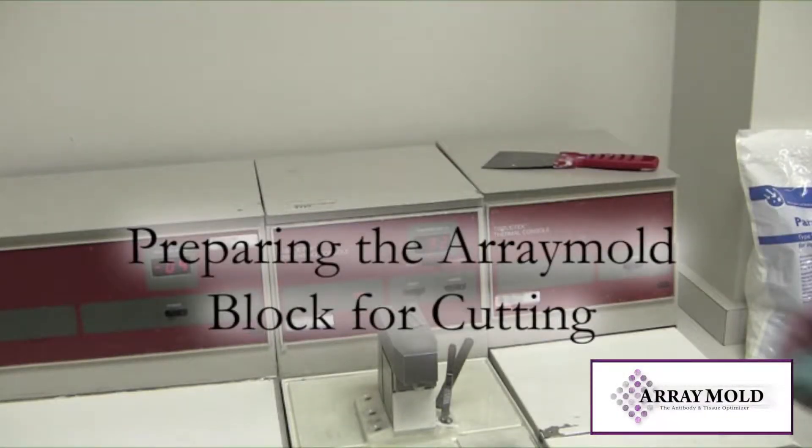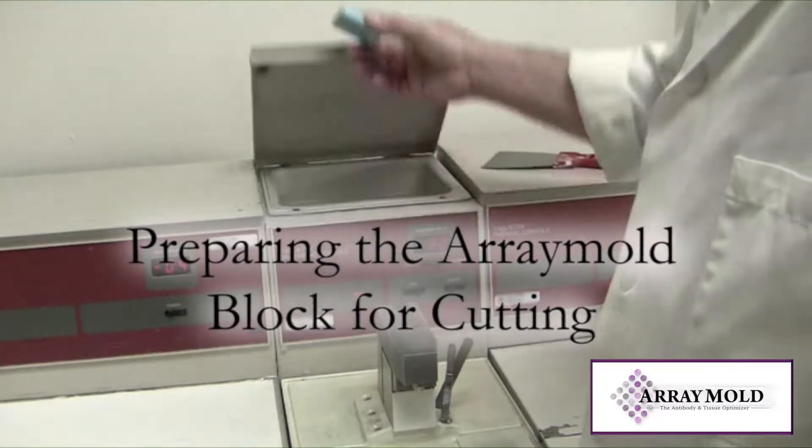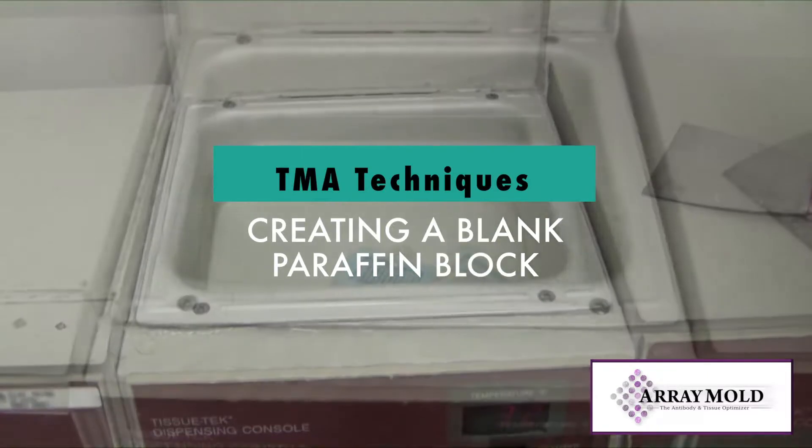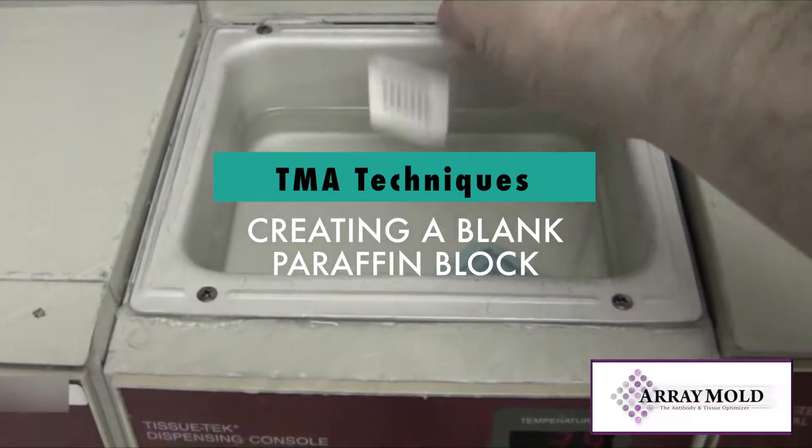Hi, everyone. Welcome to this special video. I'm preparing your tissue microarray block for cutting. Once your array mold is warmed up in a paraffin bath, place it on an ice plate or an ice tray and add the cassette.